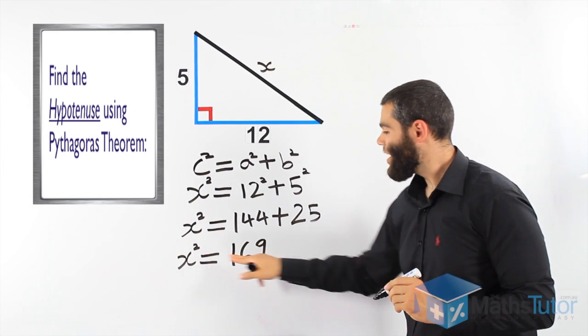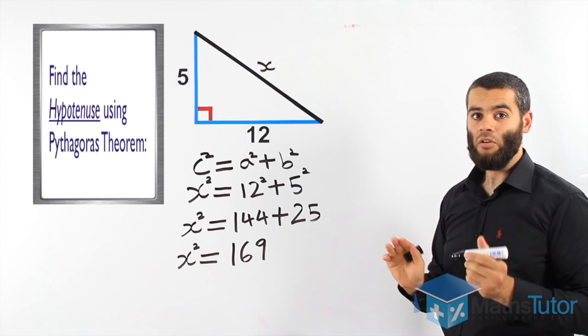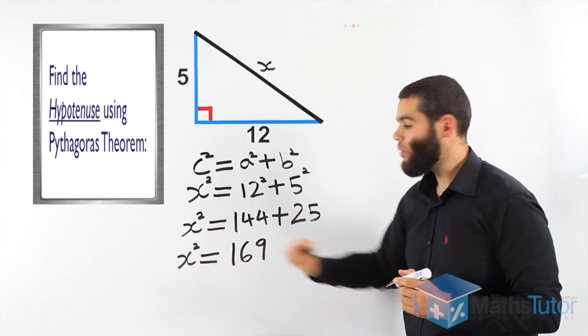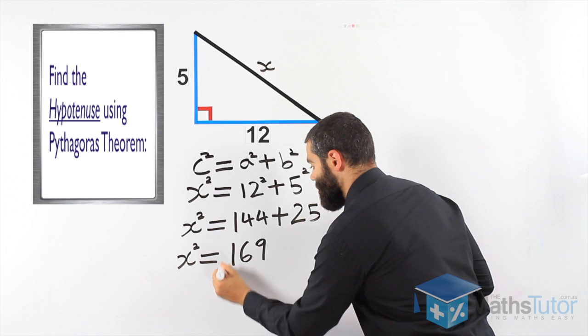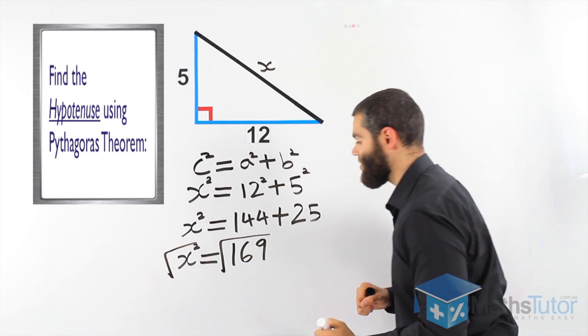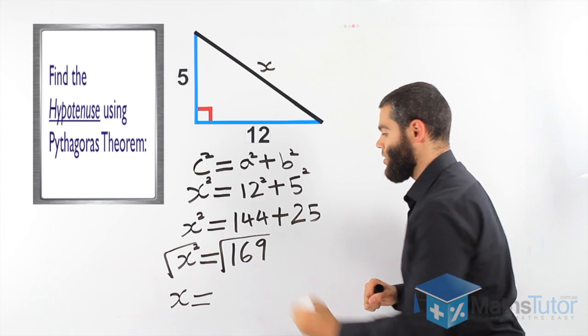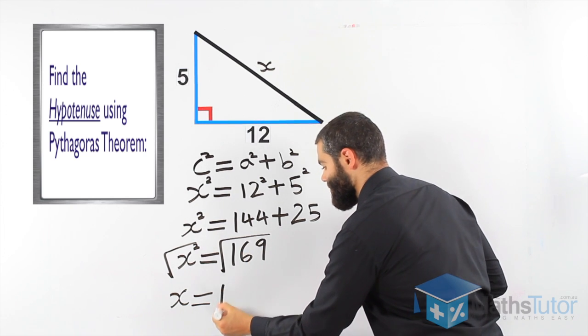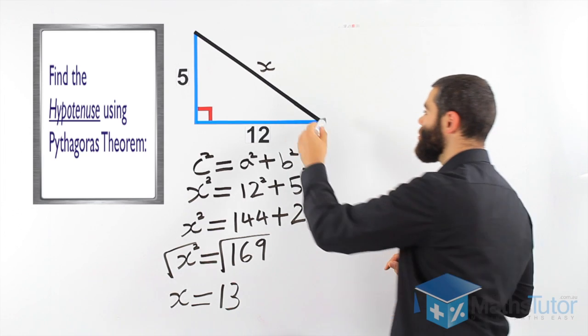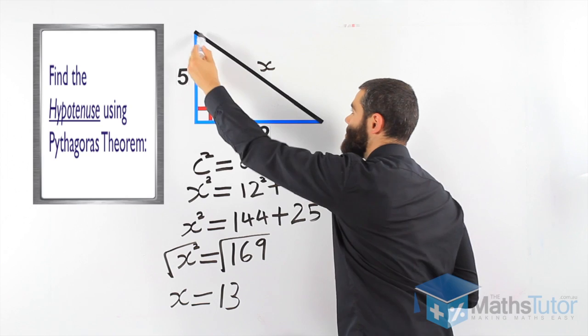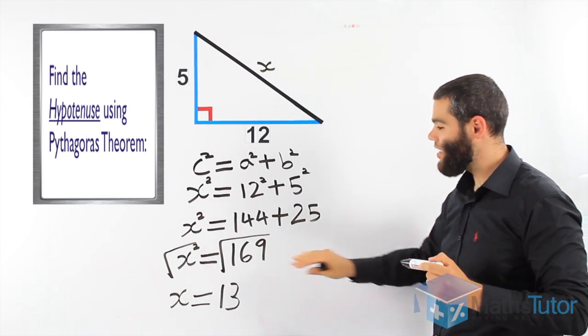Hang on. We want X. We don't want X squared. So the opposite of X squared, the opposite of squared, is square root. So we square root this side and that side to get rid of the squared. We're left with X. Square root of 169. 13. That means the hypotenuse is 13 units long. This is 12. This is 5. The longest side, in this case here, is 13.